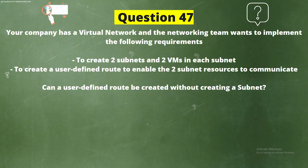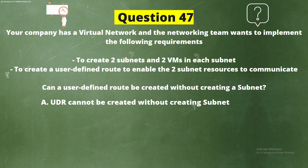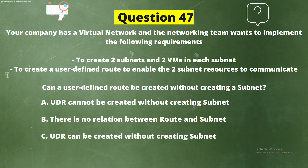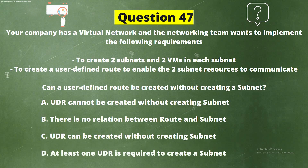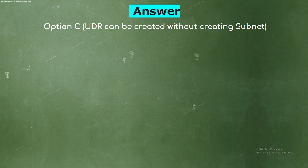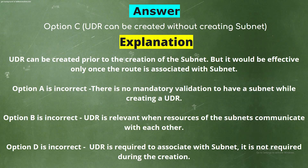Question 47: Your company has a virtual network and the networking team wants to implement the following requirements — to create two subnets and two VMs in each subnet, and to create a user-defined route to enable the two subnet resources to communicate. Can a user-defined route be created without creating a subnet? The correct answer is Option C: UDR can be created without creating a subnet. Explanation: UDR can be created prior to the creation of the subnet, but it would be effective only once the route is associated with the subnet.